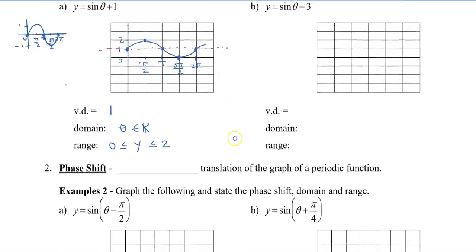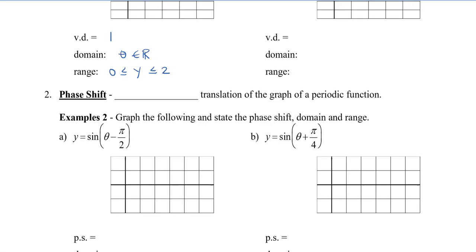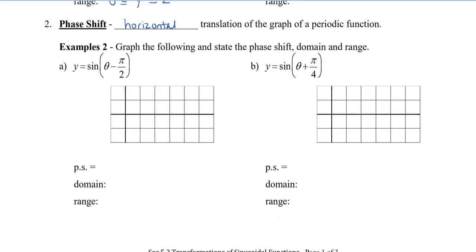Now let's take a look at phase shift. Phase shift in trigonometry is what we call a horizontal translation. Let's look at an example — we have sine with theta minus π/2 inside the brackets, so the phase shift is π/2. Because it's a minus, we know this is shifted to the right. Keeping the sine graph in mind, I'm now going to shift this whole basic sine graph π/2 units to the right.